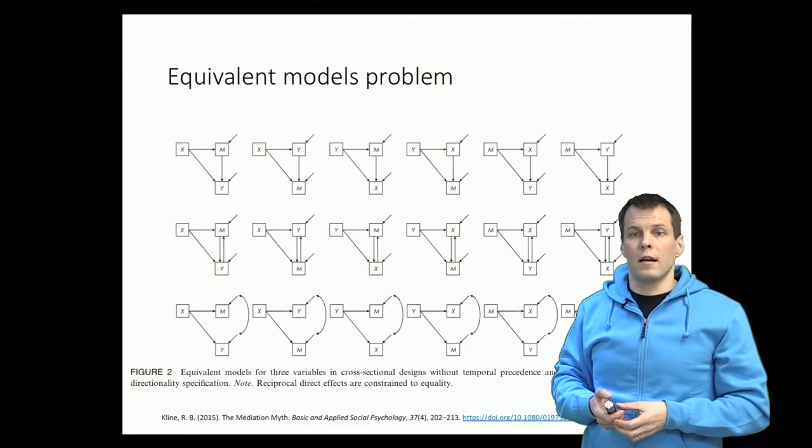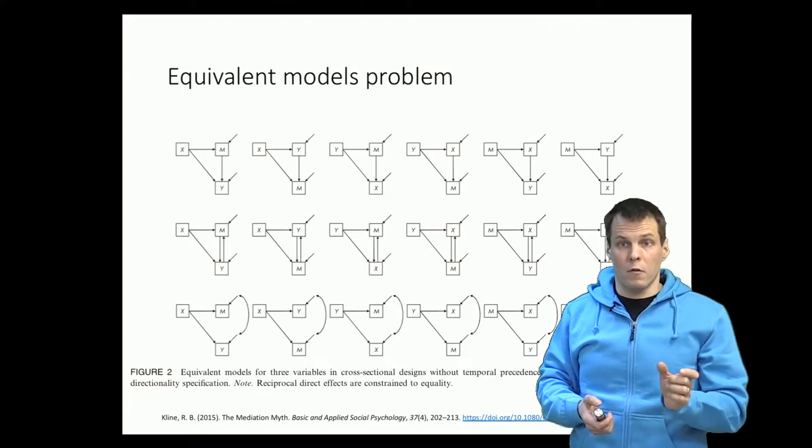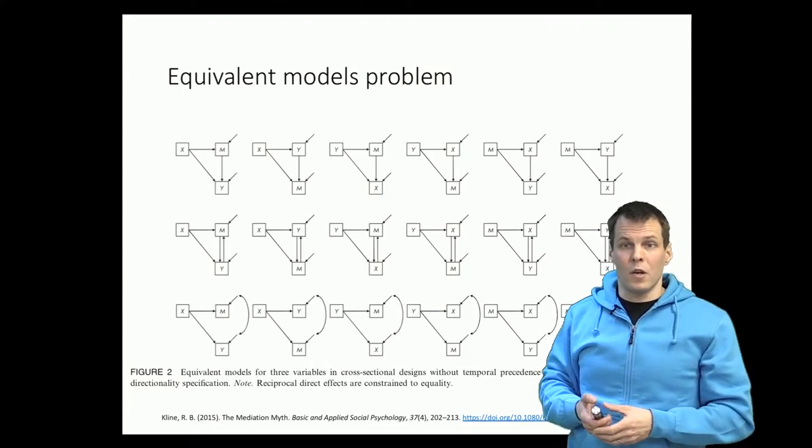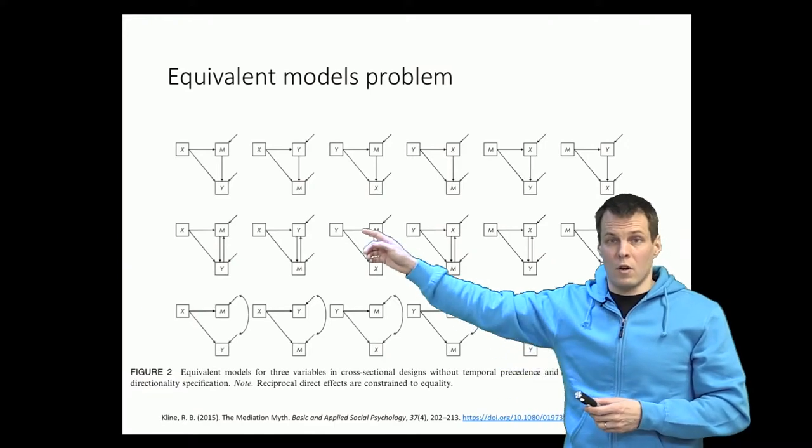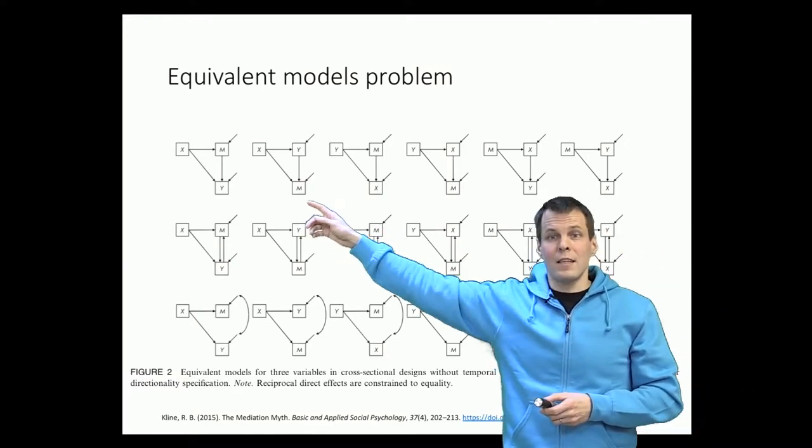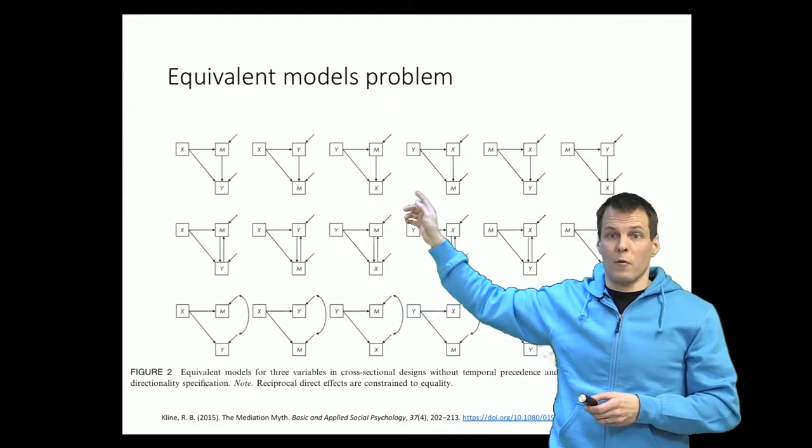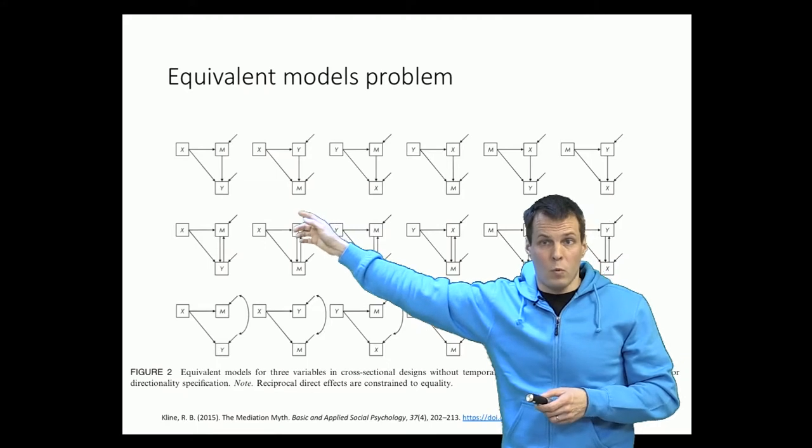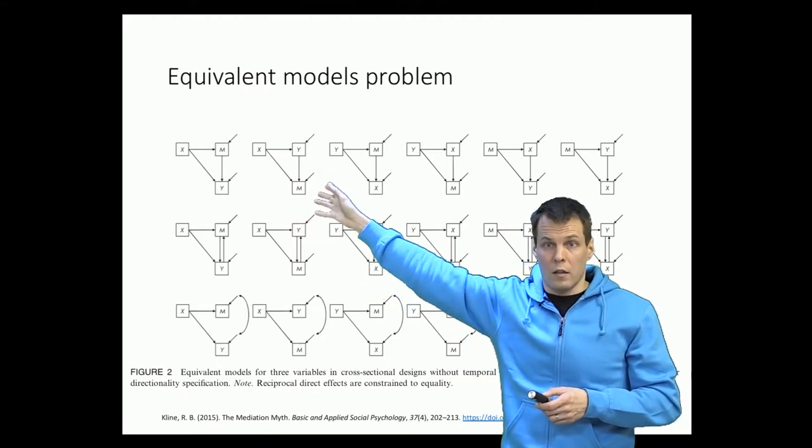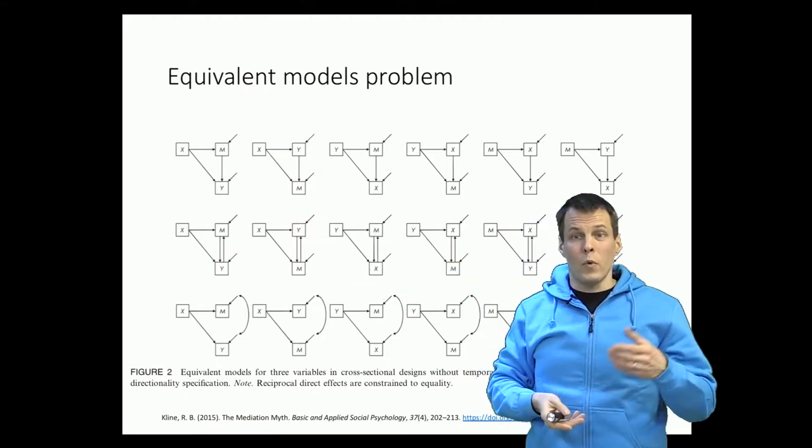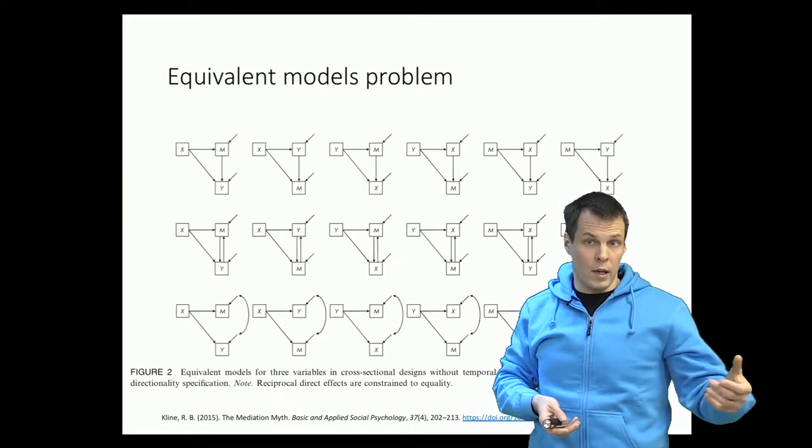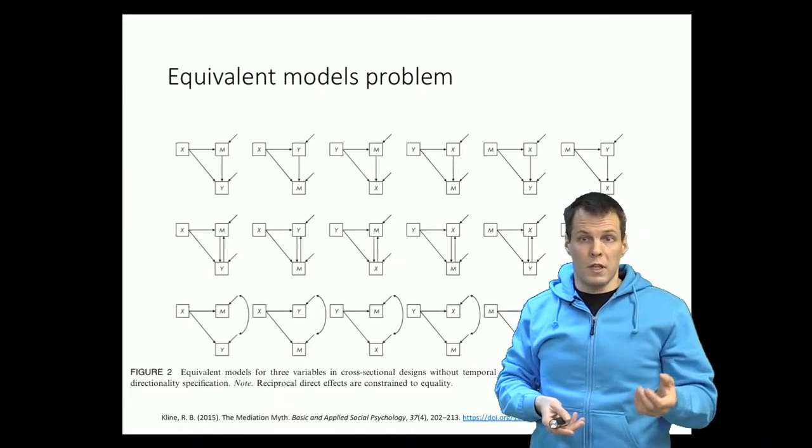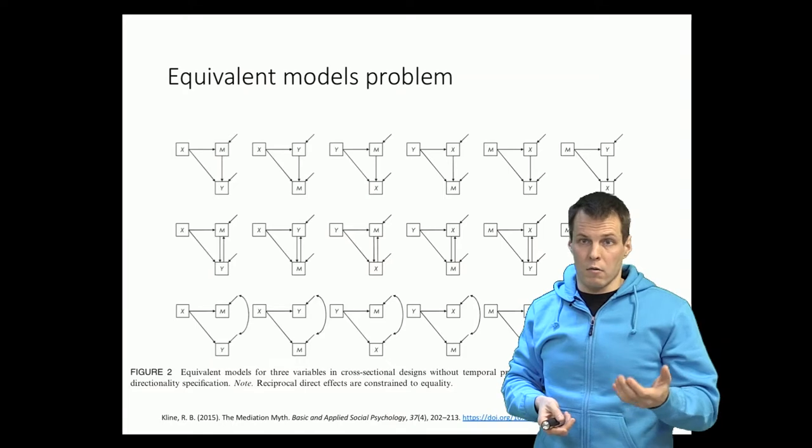Another concern is that just by running a regression of X, M, and Y, you can run the same mediation model in six different ways just by reversing some of the regression paths. This is the same model with just the positions of X, M, and Y reversed or altered. You can't really say which one of those is correct empirically because they all produce the exact same model-implied correlation matrix.